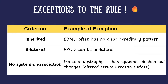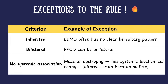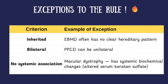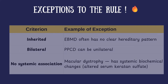But this is where medicine keeps us humble — there are exceptions. For example, epithelial basement membrane dystrophy often has no clear hereditary pattern. Similarly, posterior polymorphous corneal dystrophy can sometimes be unilateral. Macular corneal dystrophy can have systemic biochemical changes, especially altered serum keratan sulfate levels, giving different phenotypes. So while the definition gives you a framework, the real world always throws curveballs.